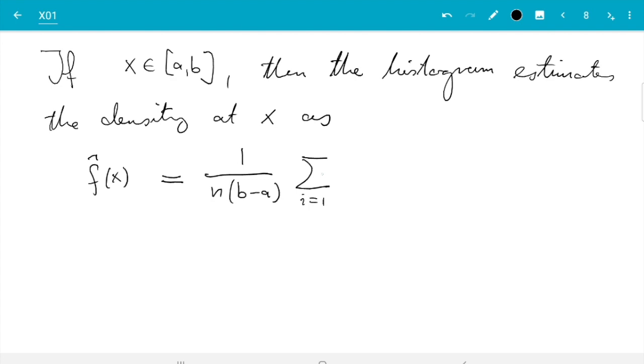So it's 1 over n times the width of the interval, which is b minus a, and then the count, so sum i from 1 to n, indicator function of [a,b] of x_i. So that's the formula we just had, only with slight change of notation.